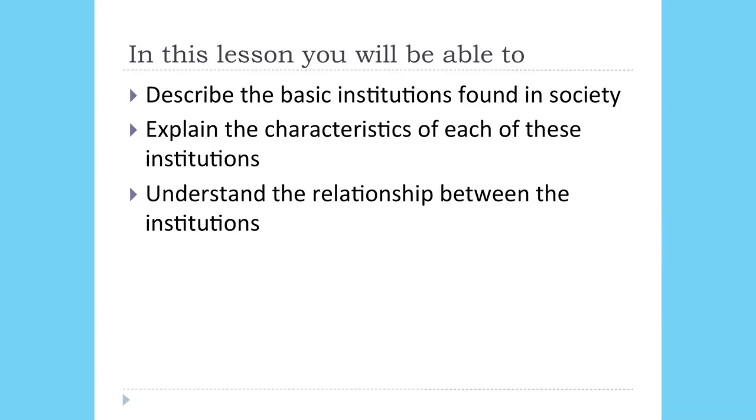In this lesson you will be able to describe the basic institutions found in society, explain the characteristics of each of these institutions, and understand the relationship between the institutions. You might be aware that society is functioning because of various social institutions. These social institutions are based on the economic, political, religious and other kinds of institutions, and the entire social organization is based on the functioning of these institutions. So social institutions are extremely important for the smooth functioning of society.